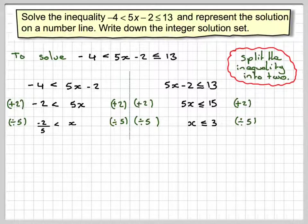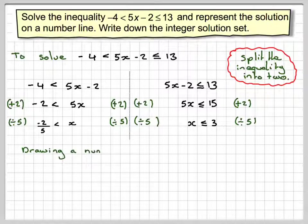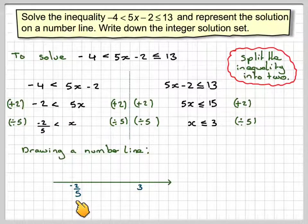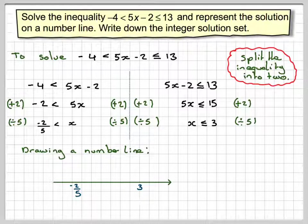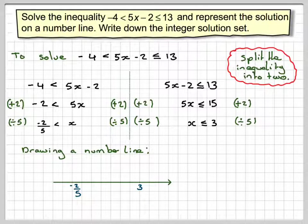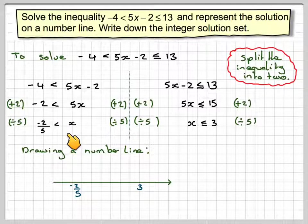Right, now we need to put that on a number line. So we'll draw a number line and put on the two numbers, minus 2 over 5 and 3. This doesn't really have to be to scale. At minus 2 over 5, it is not equal to, so we put an open circle.